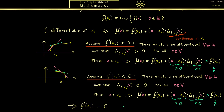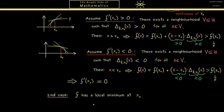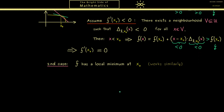To finish the proof we just have to handle the second case, where f has a local minimum at x0. However, I don't think I have to write this down because we have all the ideas and you can do a similar proof as before. In the next minutes I want to show you the important theorem of Rolle.